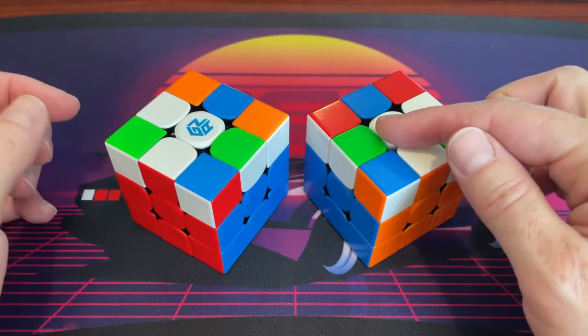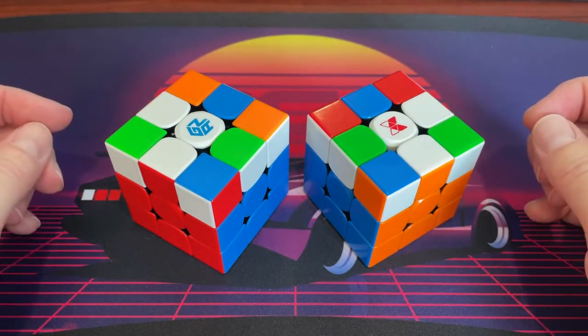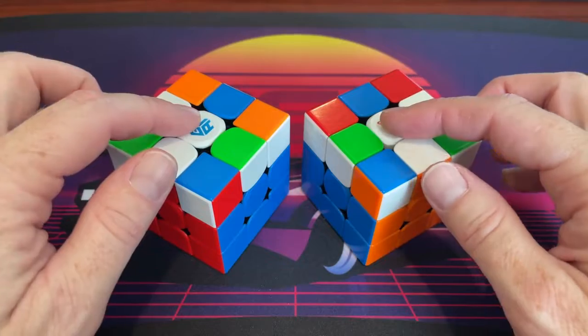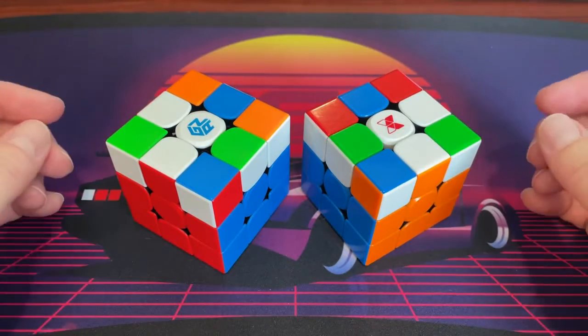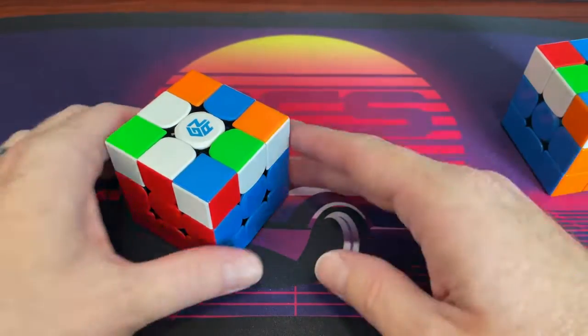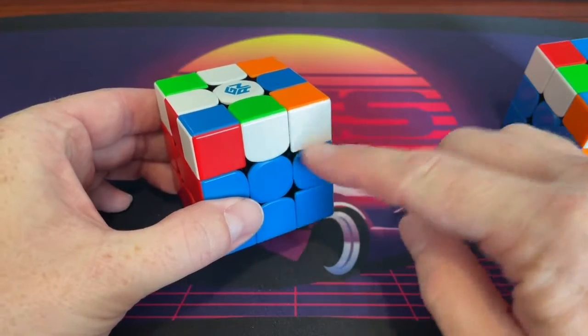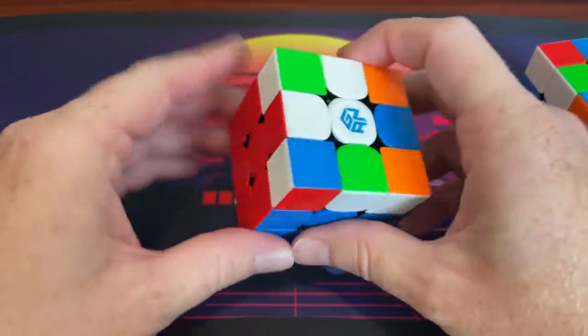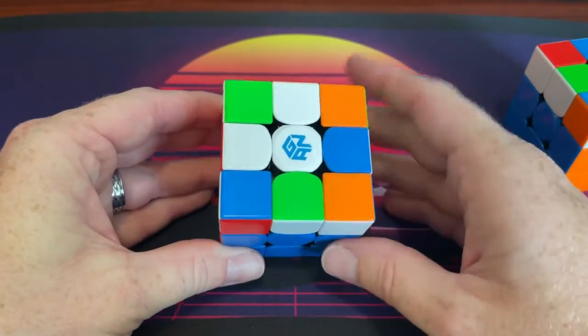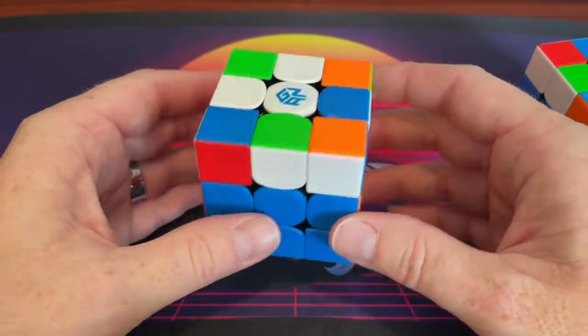OLL 48 and 47 are our second set of mirror cases. Both these cases are just two sexy moves with an F setup move. It can be recognized by this 1x2 bar as well as headlights, and this is just one of the L cases. So the case goes like this.